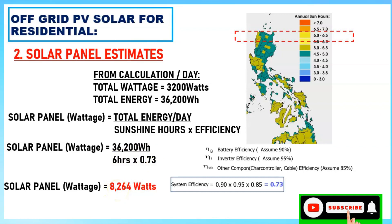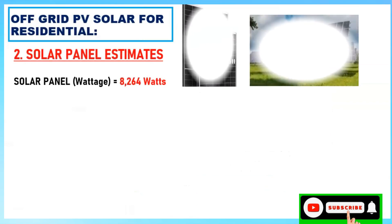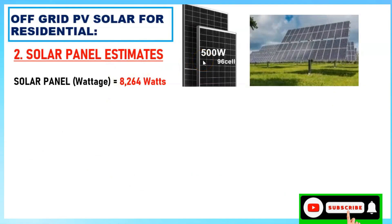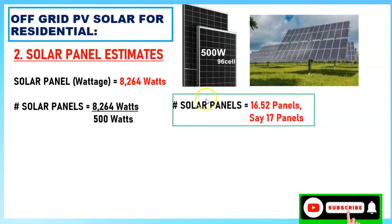That gives us 8,264 watts or 8.2 kilowatts — this is the required solar panel capacity. For the design, we'll use 500-watt panels. Panels come in various ranges: 50W, 100W, 200W, 250W, 400W, even 600W, but for this design we'll use 500 watts. You can select the wattage that suits your preference.